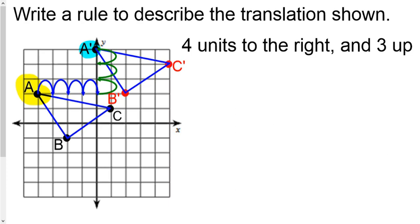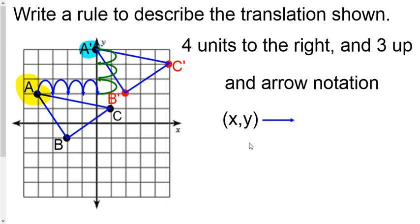What if they said please put it in arrow notation? You start with (x, y)—it always starts right here, it's never going to change. Then draw a little arrow to the right, and with the parentheses right here, ask yourself: was there any left or right movement?